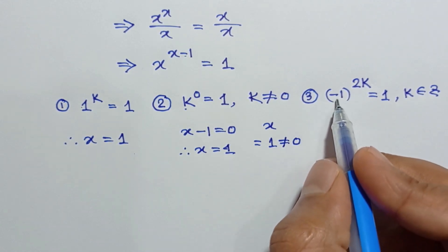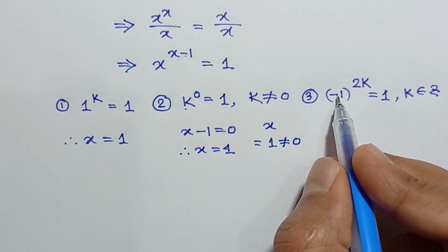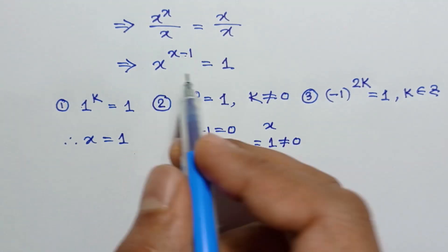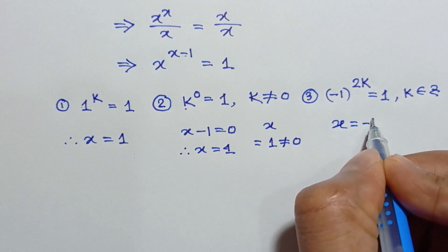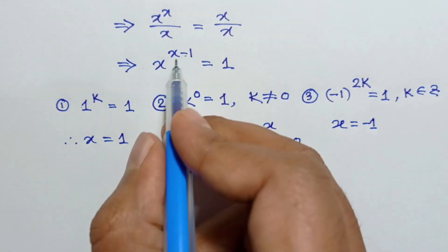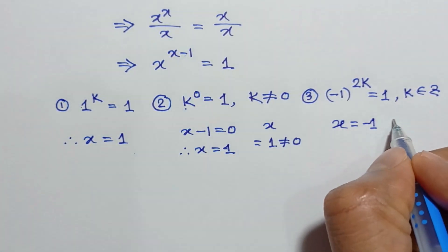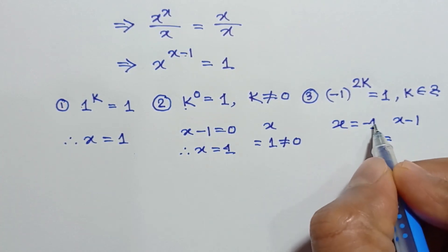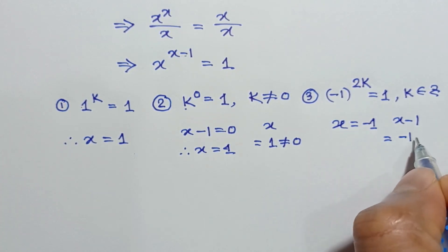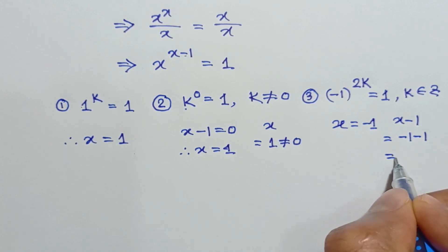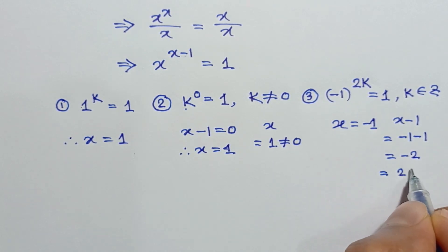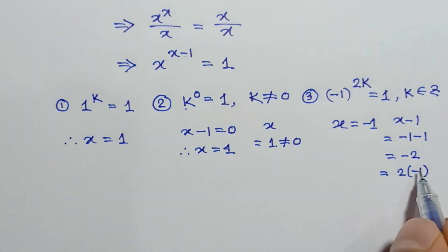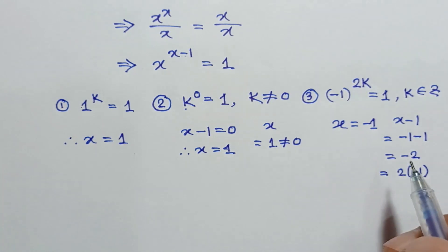For the third case, the base is negative 1. So x is equal to negative 1. And the power x minus 1 becomes negative 1 minus 1, which equals negative 2, equal to 2 times negative 1. Here negative 1 is an integer, so this is another solution.